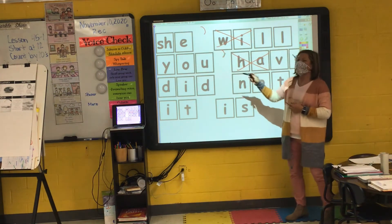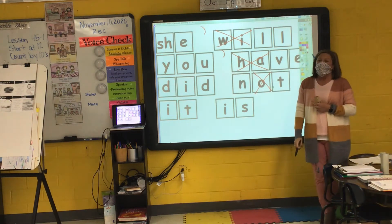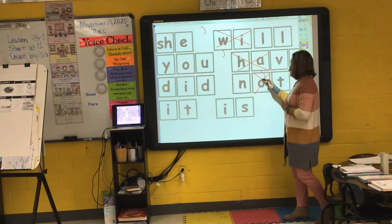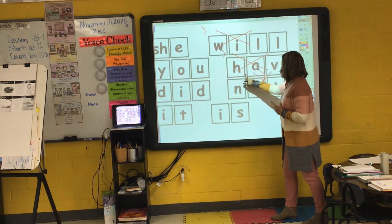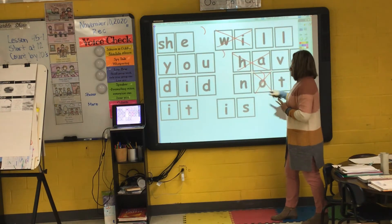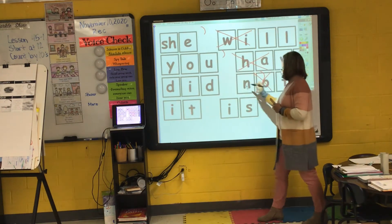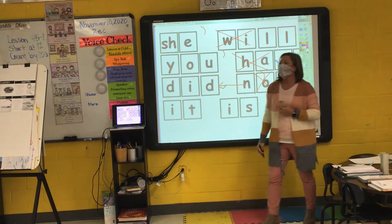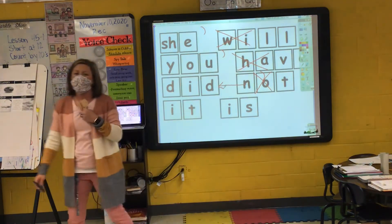I have the words 'did' and 'not.' I'm going to take out the O. What do I replace the O with? An apostrophe. My N is going to slide over here with my 'did' and I then get the contraction 'didn't.' I say it, you say it: 'didn't.'